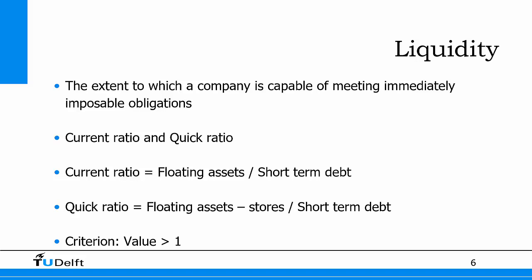The current ratio takes the floating assets and divides them by the short-term debts or current liabilities. If the floating assets are larger than the short-term debt, this value will be larger than one. The working capital also uses floating assets and short-term debt, so if you have working capital, your current ratio will be above one, which is a good sign — it means your company can do investments.